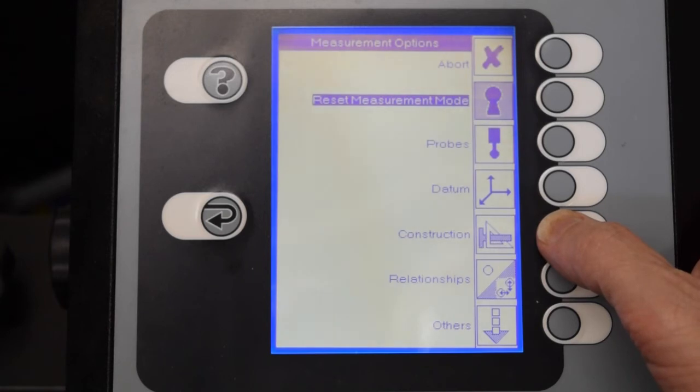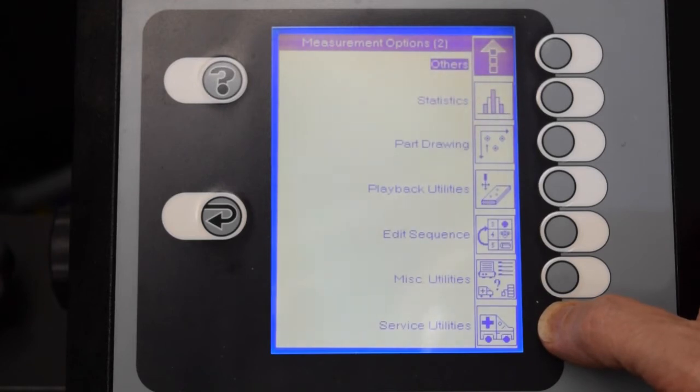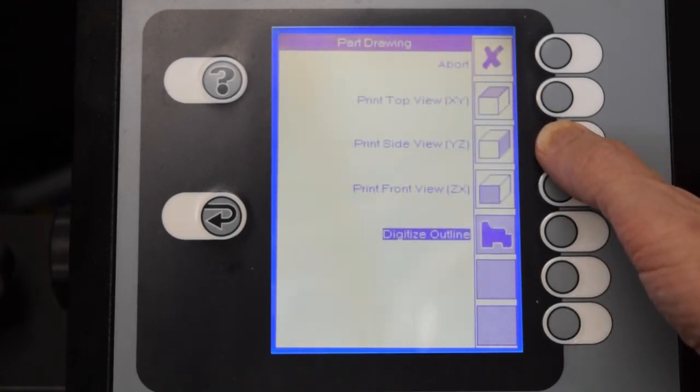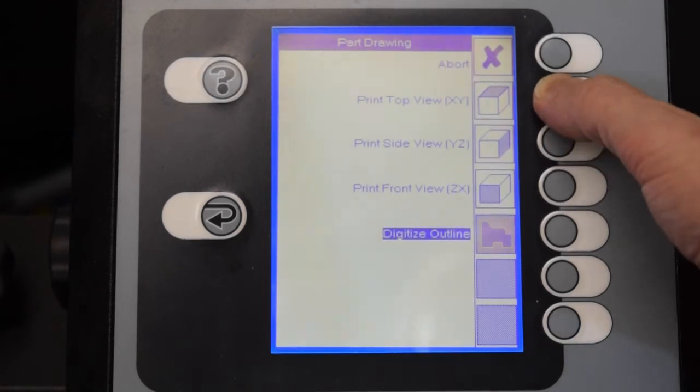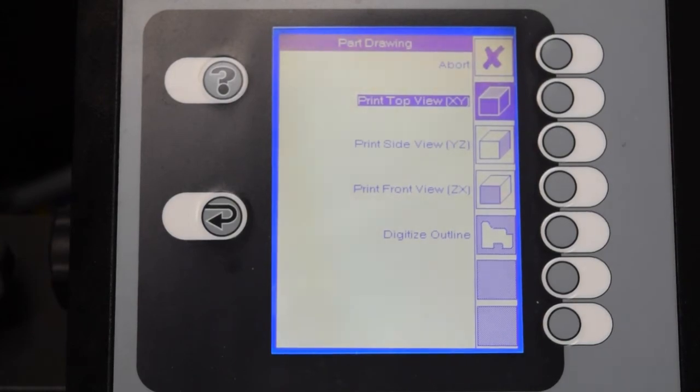At this point, I'm assuming that you've measured all the individual holes, and we can make a printout of the hole drawing with all the holes numbered with the numbers that the CMM was assigned to them. So we start by hitting the tools menu, scrolling down, hitting part drawing, and then pressing print top view.